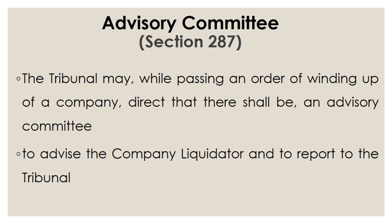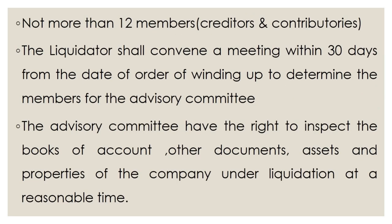Next is the advisory committee, mentioned under section 287. The tribunal may, while passing an order of winding up, direct the liquidator to constitute an advisory committee for advising the company liquidator and to report to the tribunal. An advisory committee consists of not more than 12 members of the company, including creditors and contributors. The liquidator should convene a meeting within 30 days from the date of the order of winding up to determine the members for the advisory committee. The liquidator together with the tribunal selects the 12 members. The advisory committee has the right to inspect all books of accounts, documents, assets and properties of the company under liquidation.